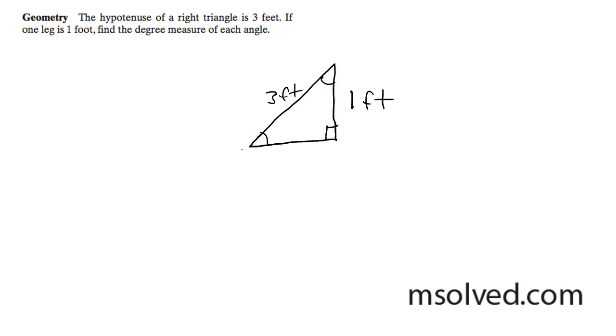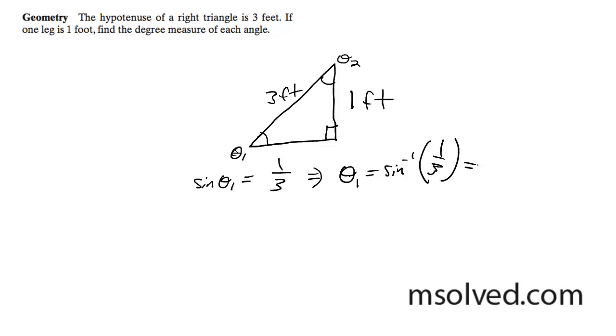I'll call this theta 1 and call this theta 2. The sine of theta 1 is equal to 1 over 3. So theta 1 equals inverse sine of 1 over 3, which gives us 19.47, which I'll round to 19.5 degrees.